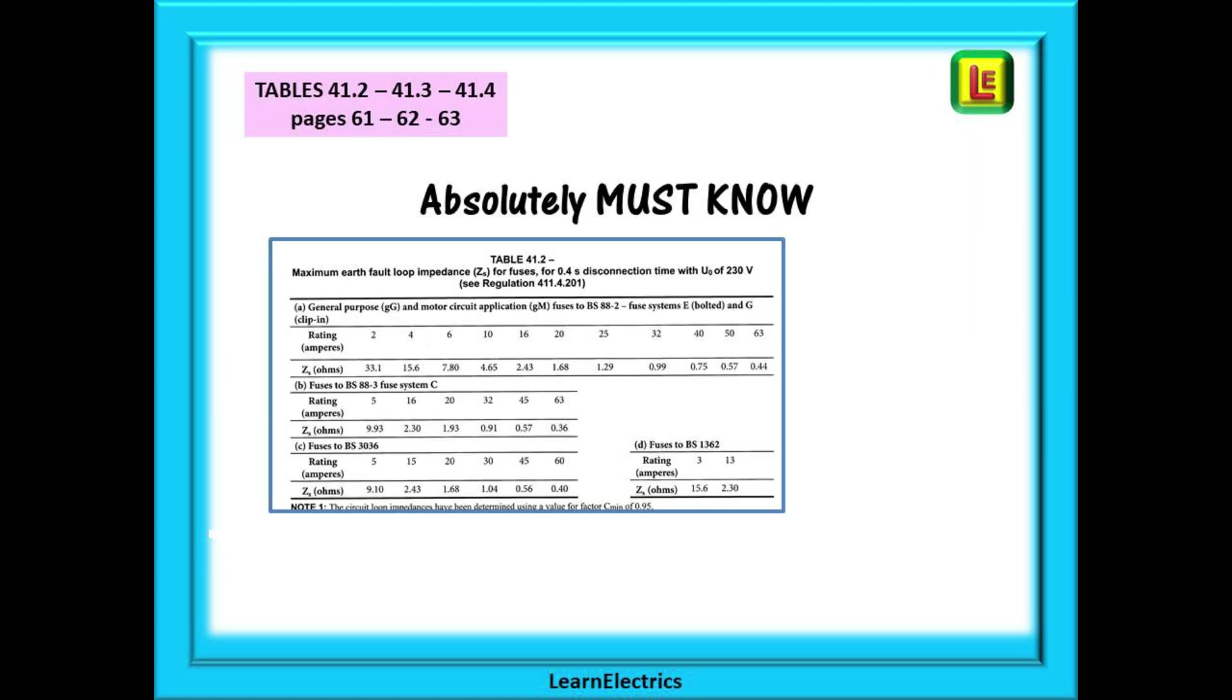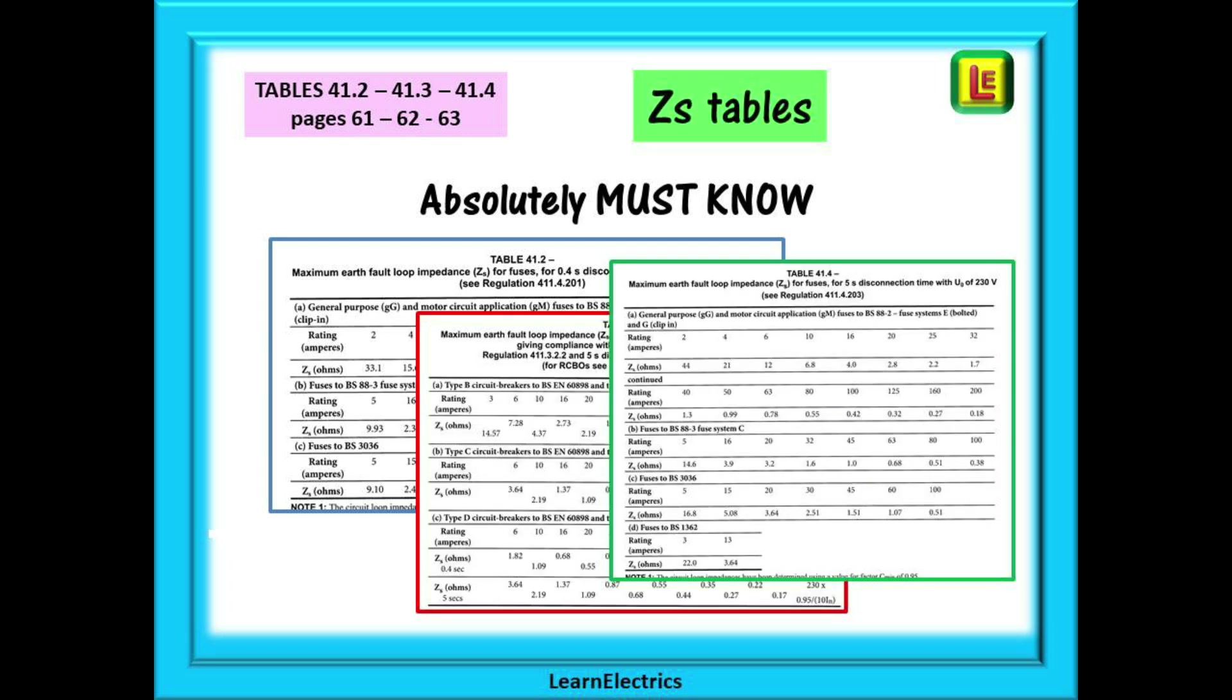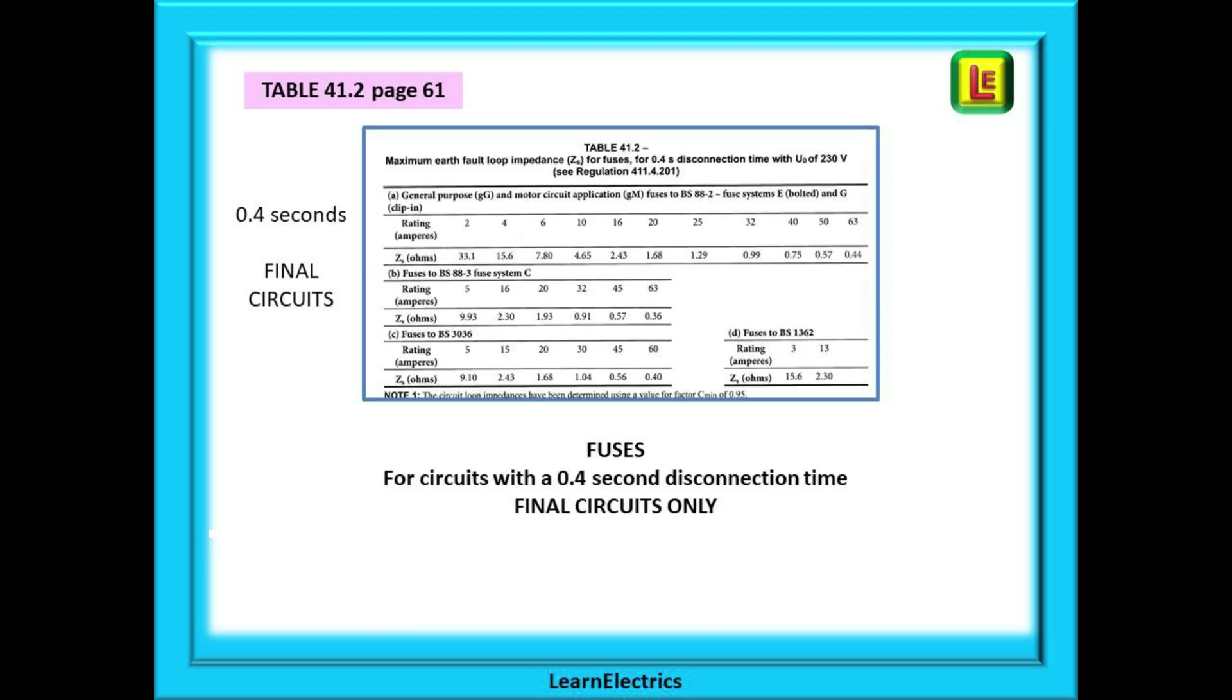On the next few pages are three tables that you absolutely must know. These are the ZS tables and you will be asked questions on these in the exam. Begin by looking at Table 41.2 on page 61. Look at the title. Don't assume you know what it says - look at it. It tells us this table is for fuses but only for circuits with a 0.4 second disconnection time. In other words, final circuits.